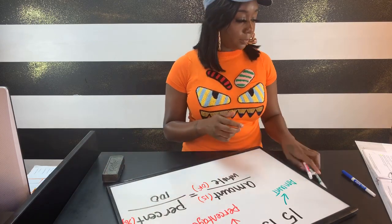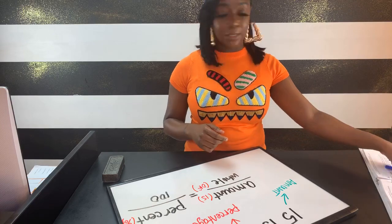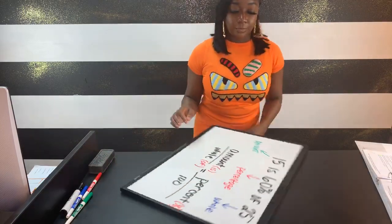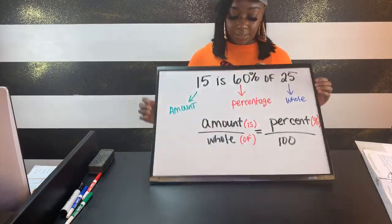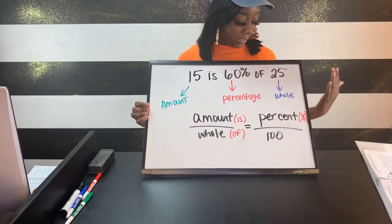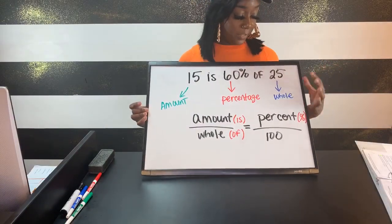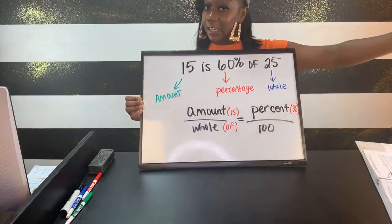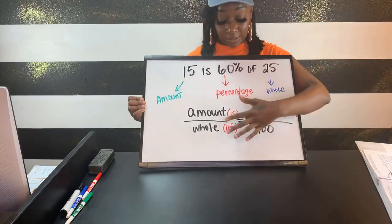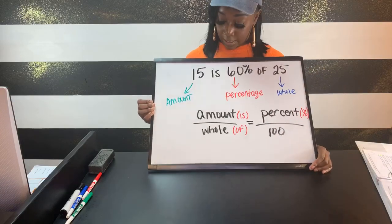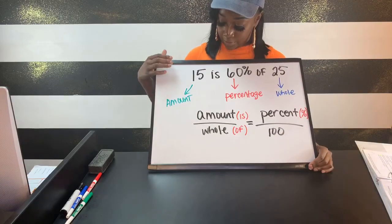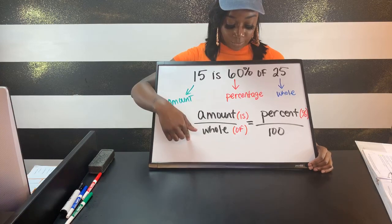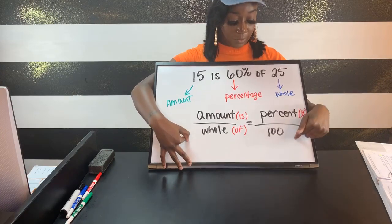All right, let's get into this practice problem. It says 15 is 60% of 25. We didn't actually need to solve this — it's just an example to break down how you identify the different parts of the problem. The setup is: amount over whole equals percent over 100.